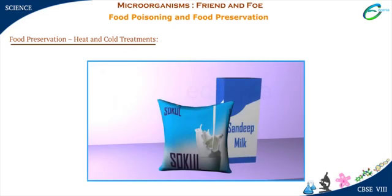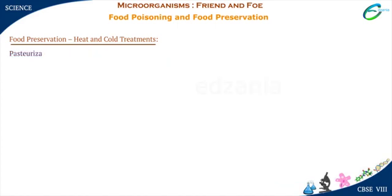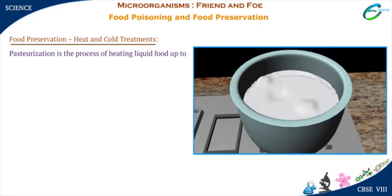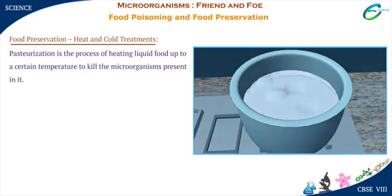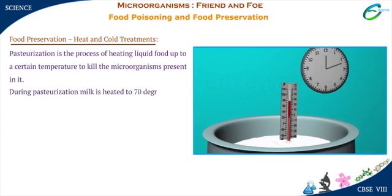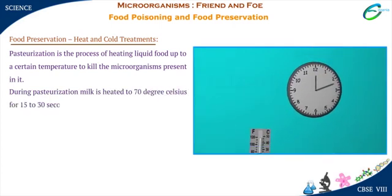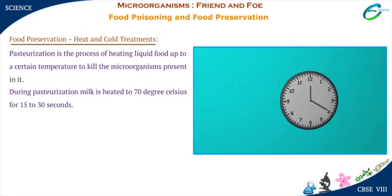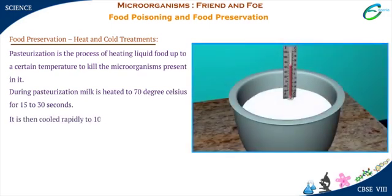Have you ever noticed that the milk we receive in packets does not spoil easily? It is because the milk we receive in packets is pasteurized. Pasteurization is the process of heating liquid food up to a certain temperature to kill the microorganisms present in it. During pasteurization, milk is heated to 70 degrees Celsius for 15 to 30 seconds. It is then cooled rapidly to 10 degrees Celsius, chilled and stored.